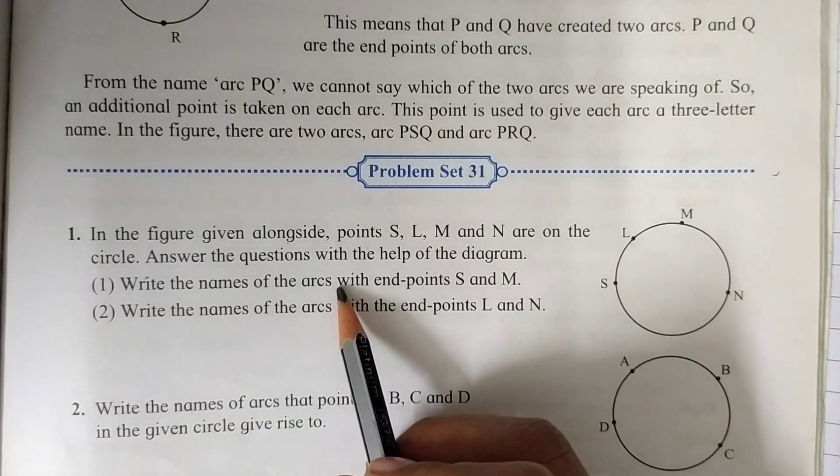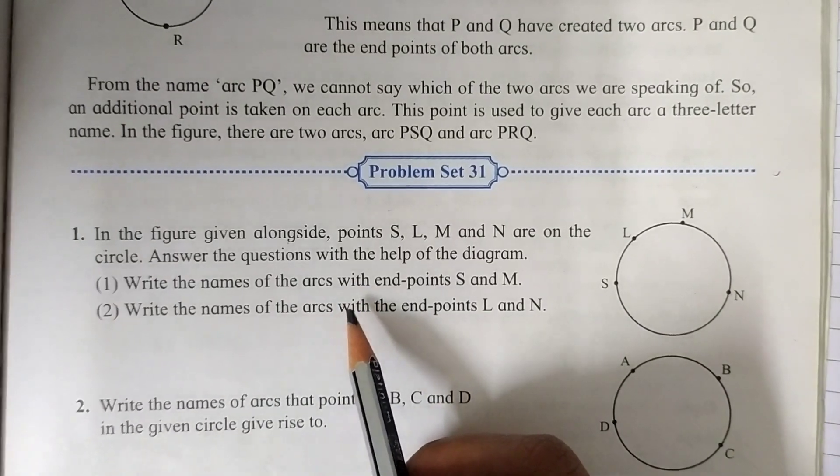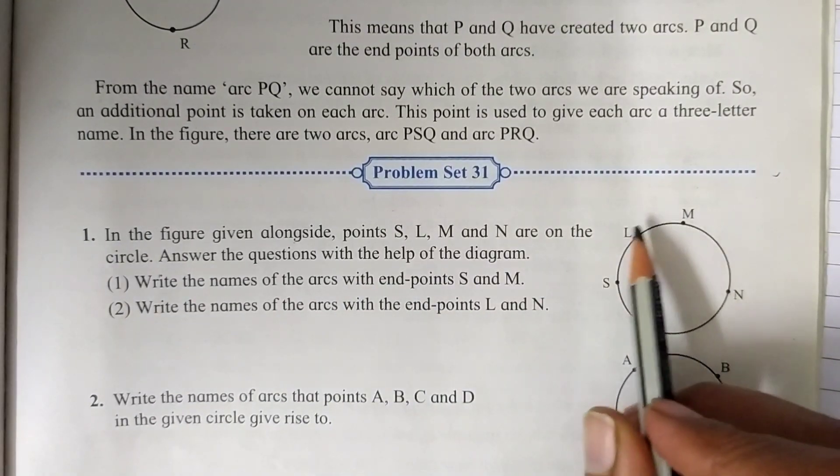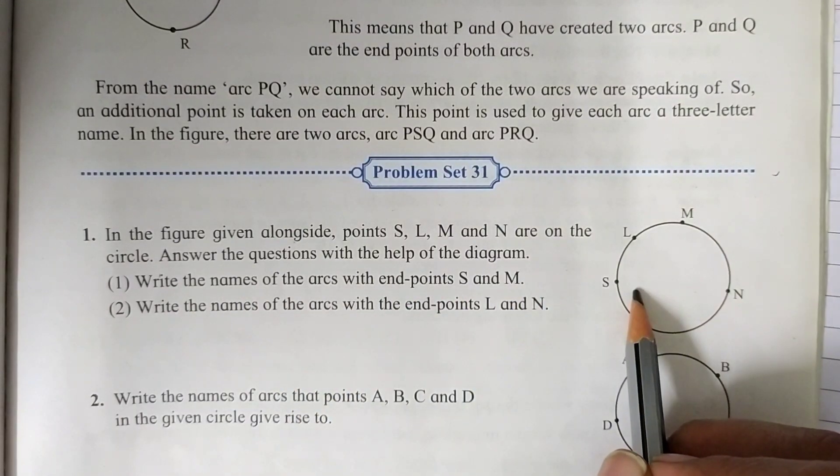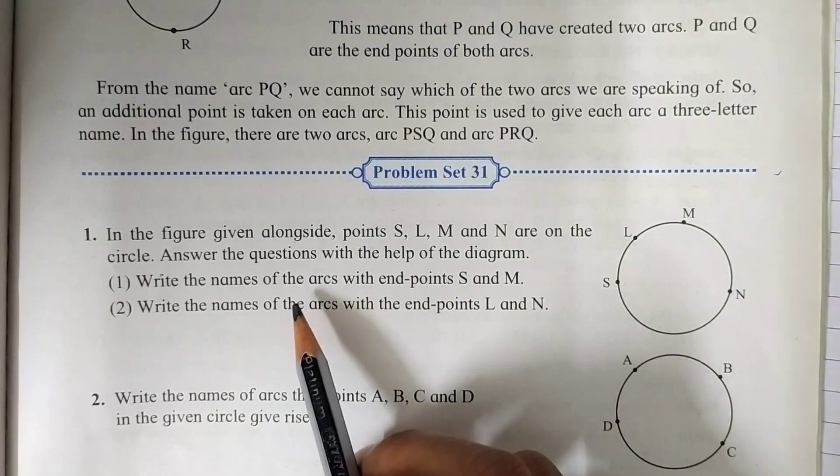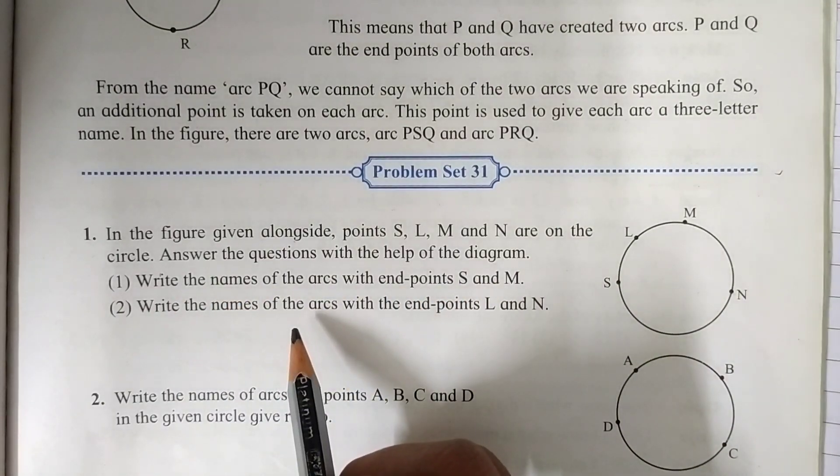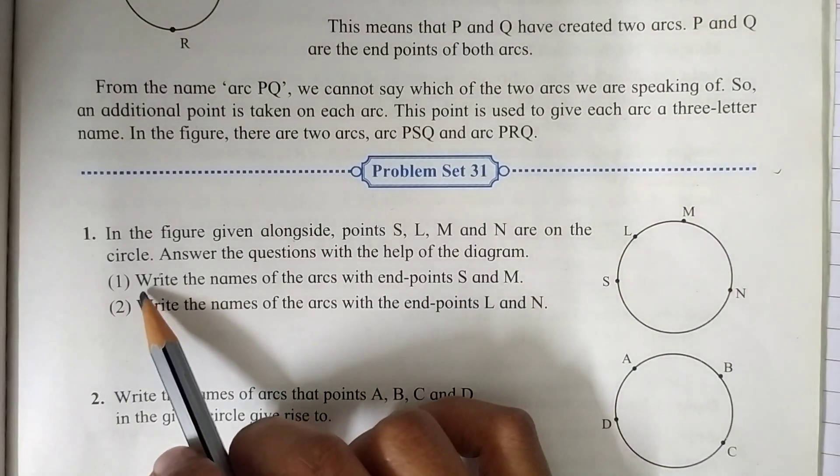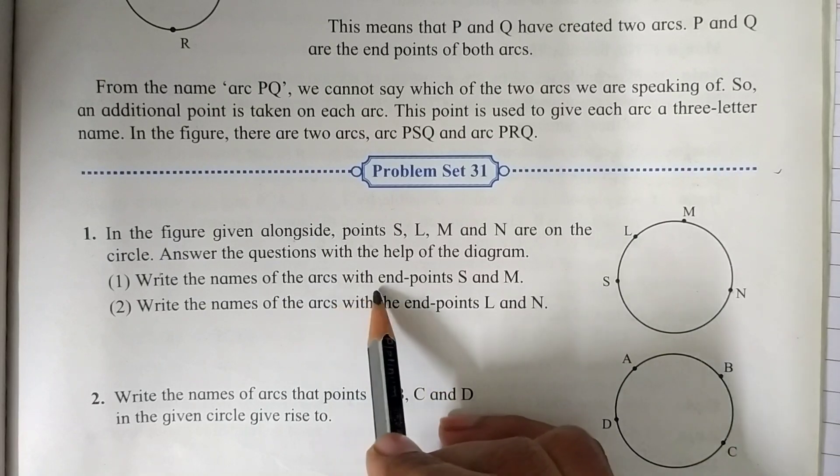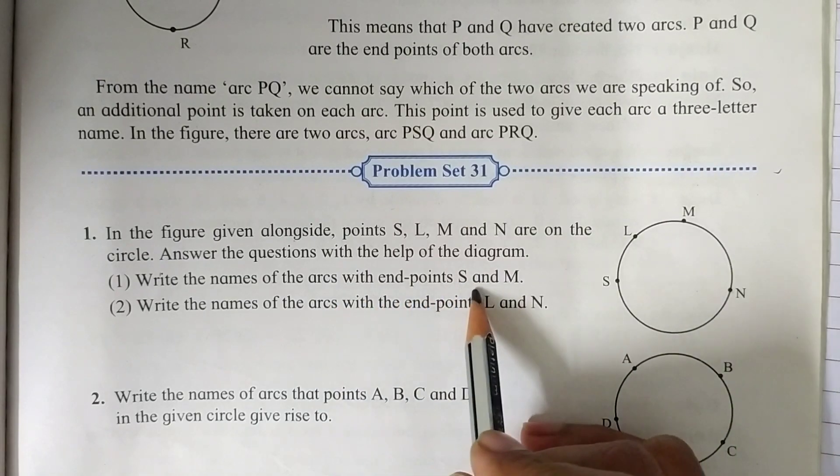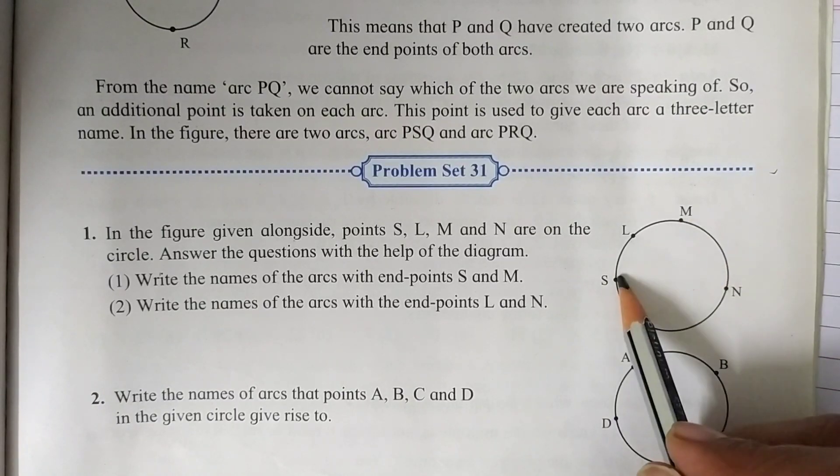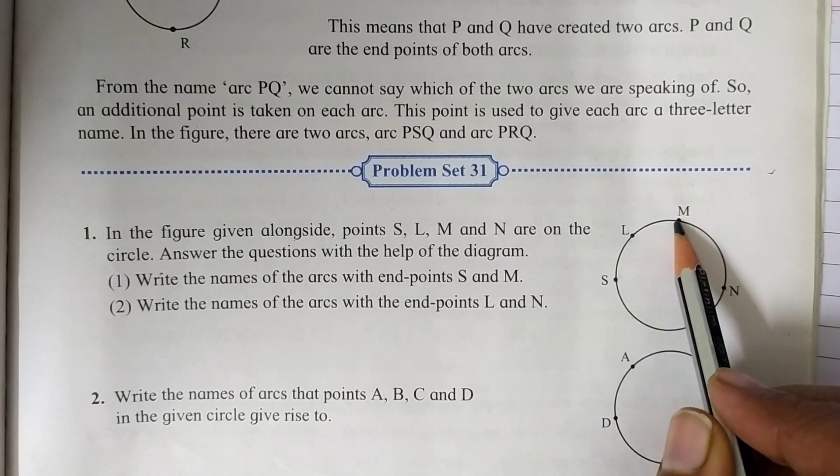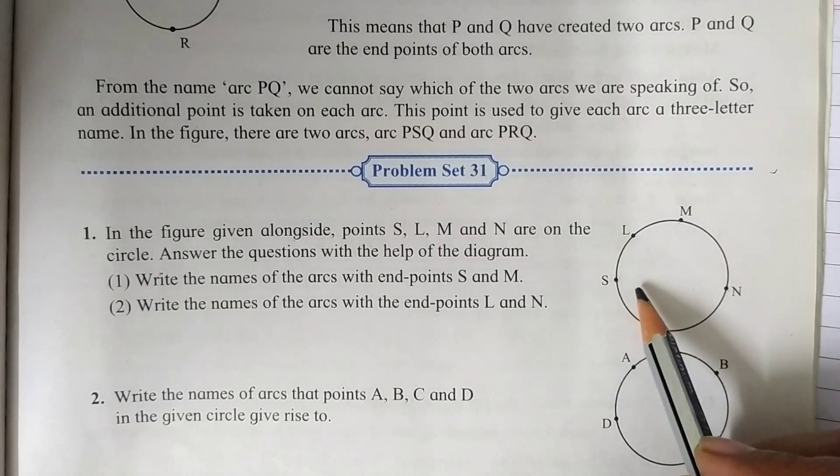Here in first question two questions are asked and a diagram is given alongside. We have to observe the diagram and answer the questions. These questions are related to arcs. The first question is write the names of the arcs with end points S and M. Here is S and here is M.